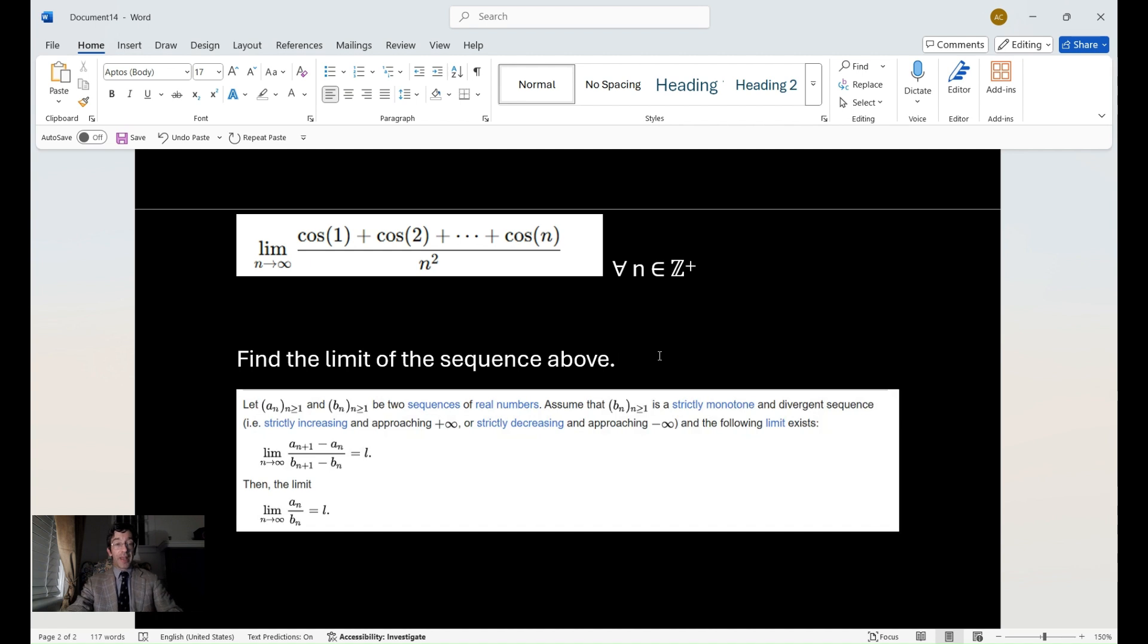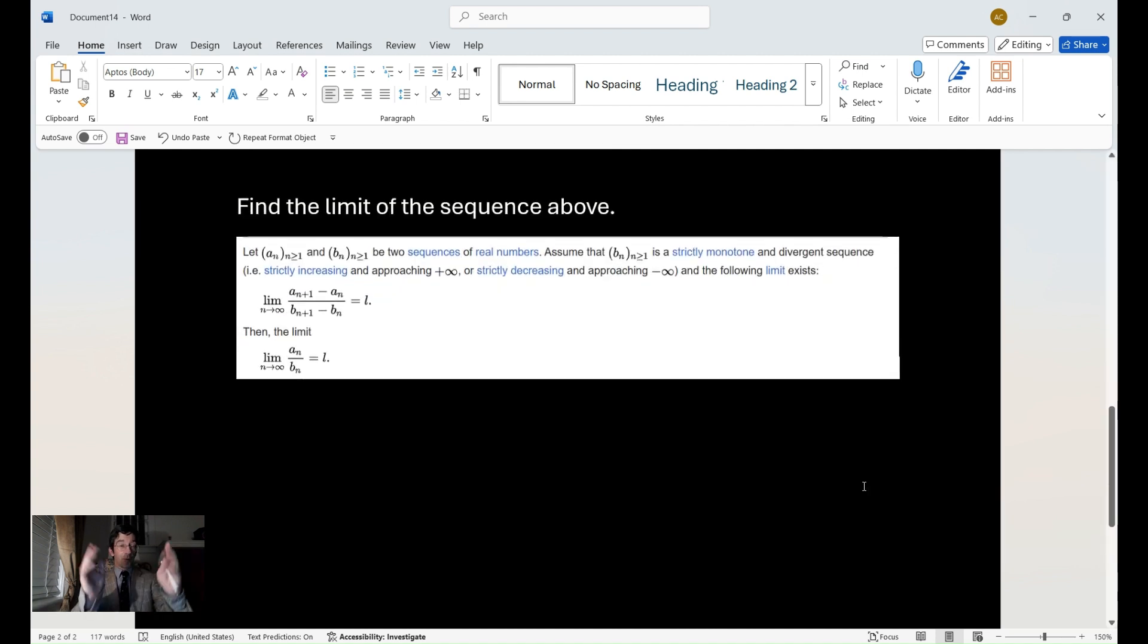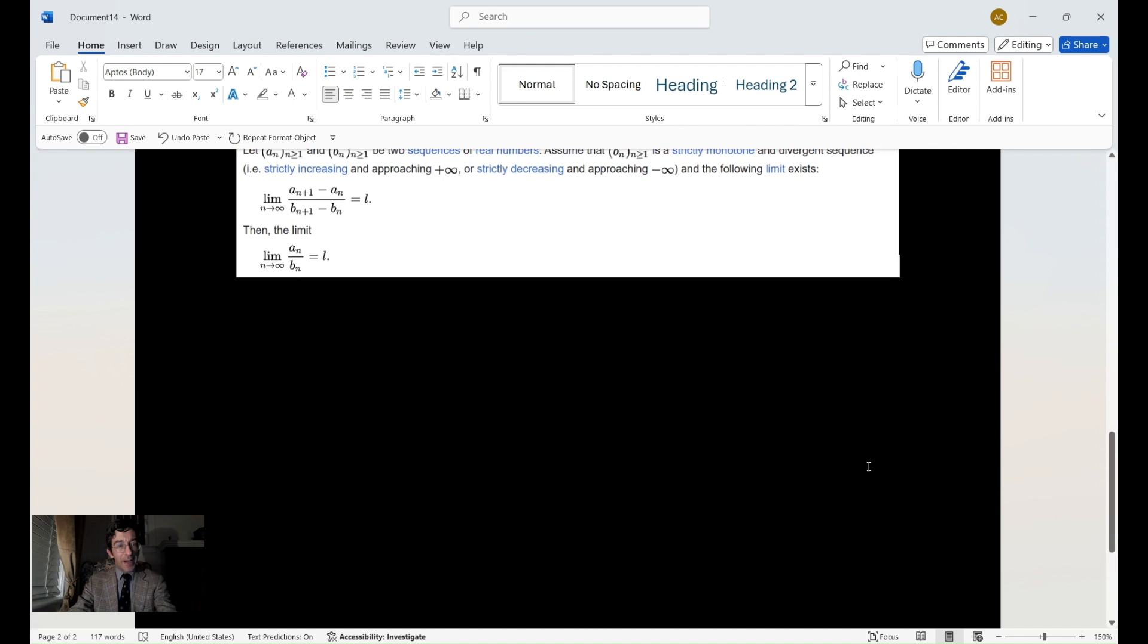And this is the definition that they have on Wikipedia, but it's good for our purpose here. It says let a sub n and n has to be a natural be greater than or equal to one and b sub n has to be greater than or equal to one be two sequences of real numbers. Assume that b sub n is a strictly monotone and divergent sequence that is strictly increasing and approaching positive infinity or strictly decreasing and approaching negative infinity. And we have the following limits. We've got the following limit. A sub n plus one minus a sub n divided by b sub n plus one minus b sub n is equal to L.